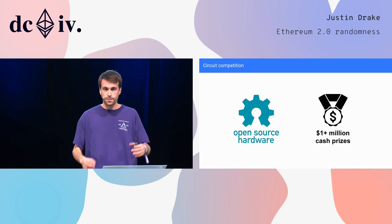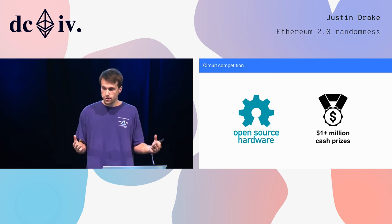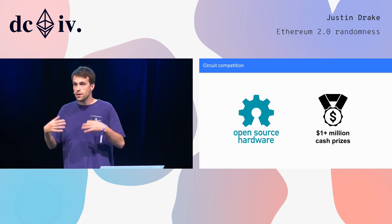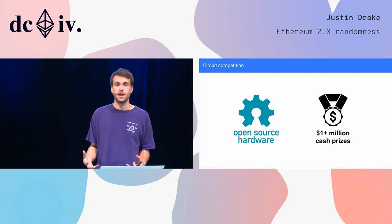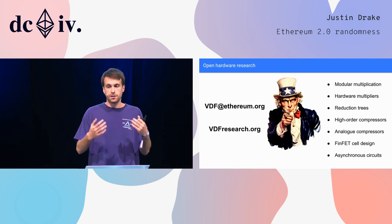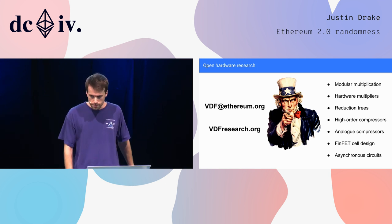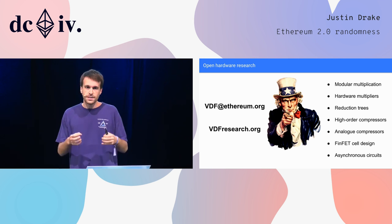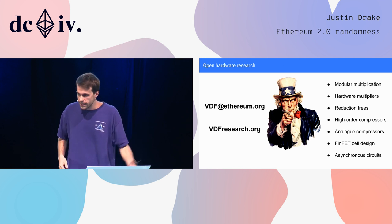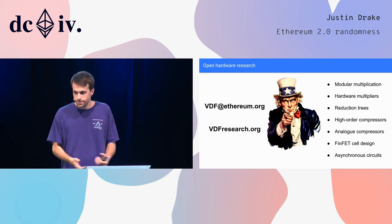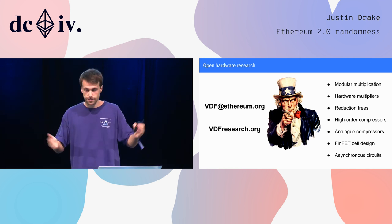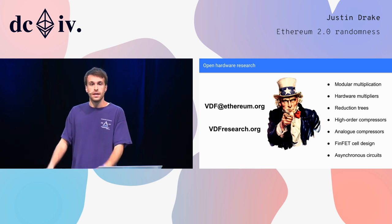One exciting thing we're doing to get the fastest possible circuit is organizing an open-source hardware competition. Anyone who knows how to design hardware circuits will be invited to design latency-optimized modular multiplication circuits, with very large cash prizes for participants. The competition may happen mid-2019. Right now we're looking at all possible ways to squeeze latency — modular multiplication, reduction trees, compressors, FinFETs. If you have expertise in these areas, please email us. Today we just released vdfresearch.org, where you'll find 30 to 40 links to dig deeper into the content.